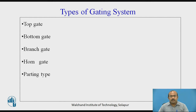Let us have a look at the types of gating system: top gate, bottom gate, branch gate, horn gate, and parting type.